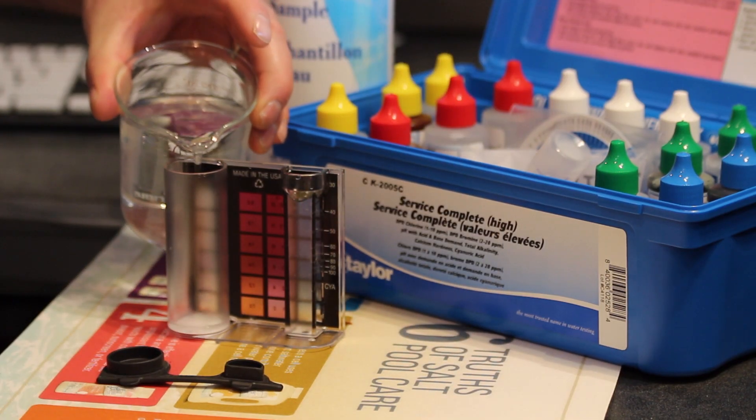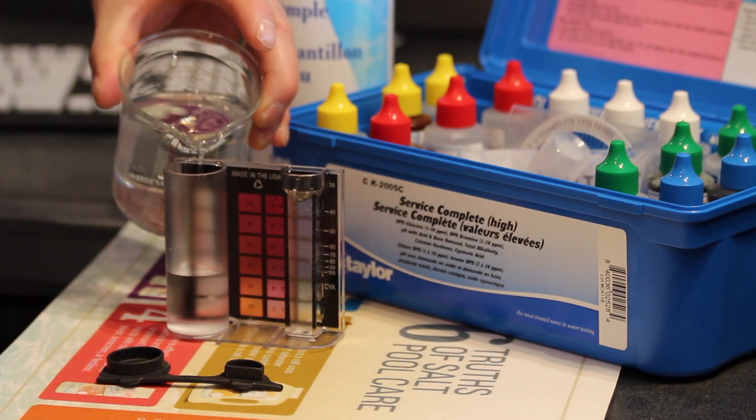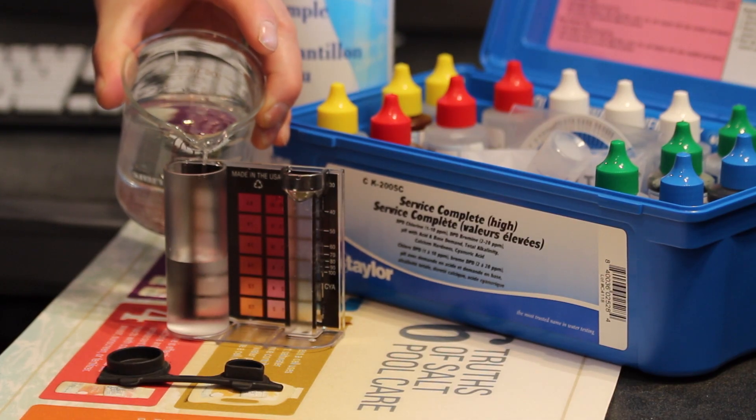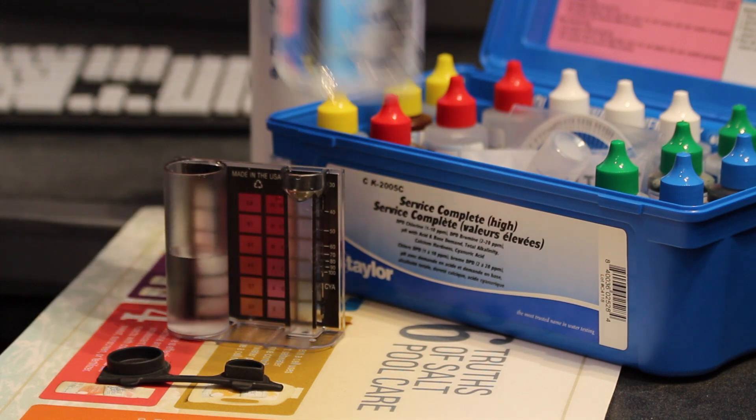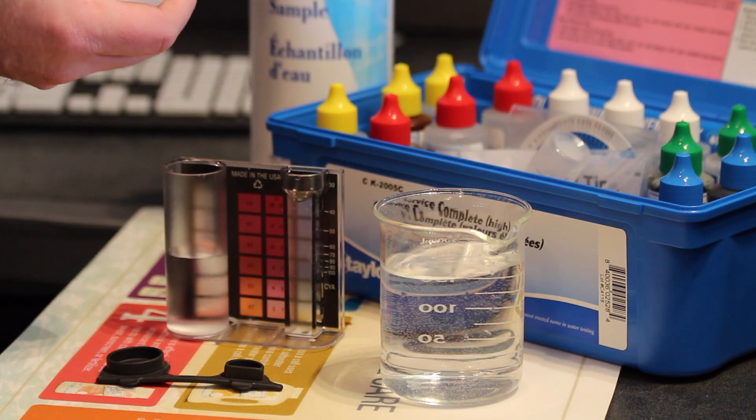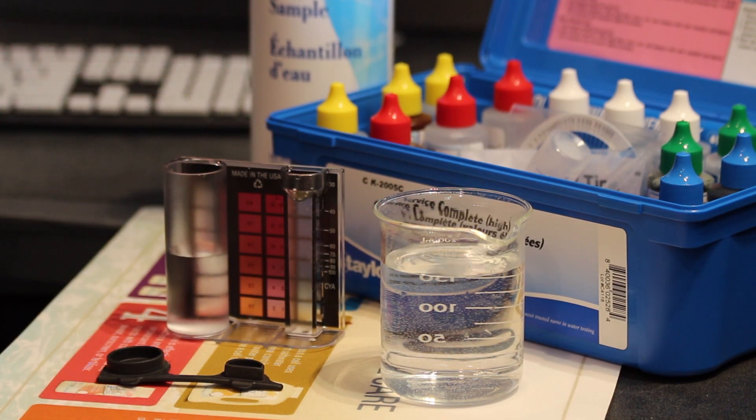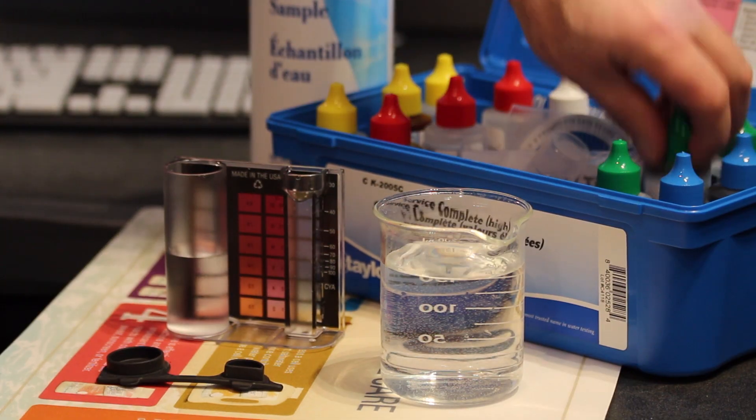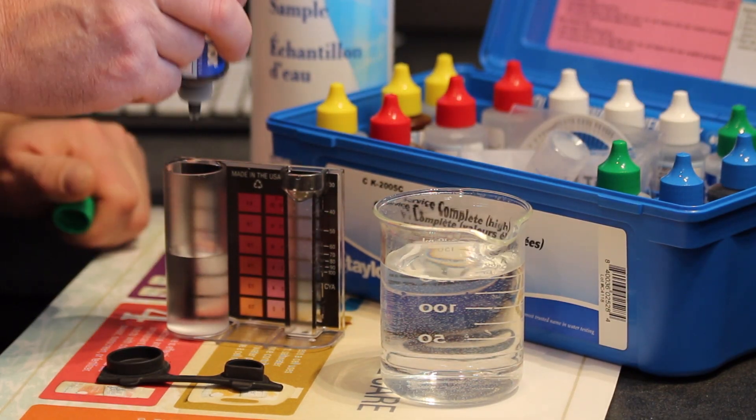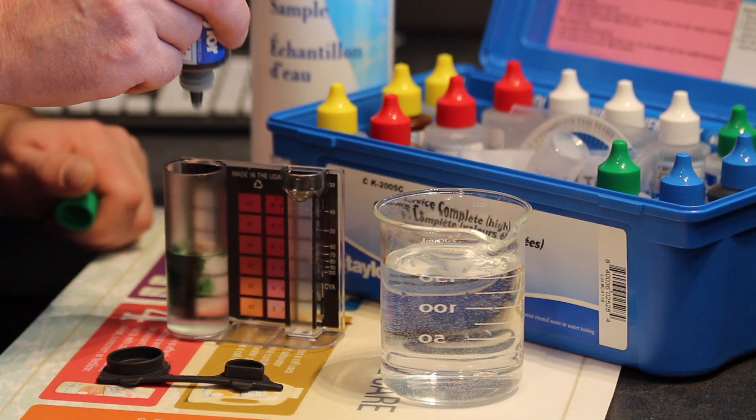To test total alkalinity, rinse then fill the large comparator tube to the 25 milliliter mark. Then add 2 drops of reagent number 7, then add 5 drops of reagent number 8 and swirl to mix. The sample should turn green.